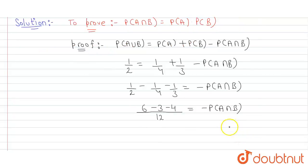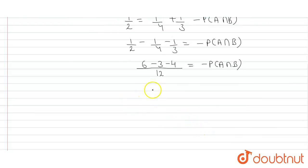So it is coming out to be minus 1 upon 12 equal to minus P(A∩B). Minus and minus cancel and we are left with P(A∩B) is equal to 1/12.